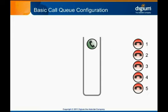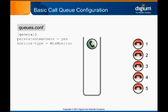Now that we've covered some of the basic terms, we can demonstrate how to configure a simple call queue. As you can guess, to do so we edit queues.conf. The typical general section is at the top, where there are many options to configure queue behavior. Options set in the general section apply globally for all queues unless they're overridden by per-queue configurations. We'll use the default general settings for our sample queue and discuss some of the specific options in a later module.